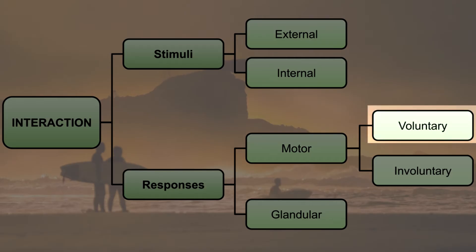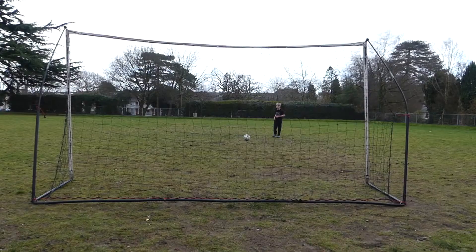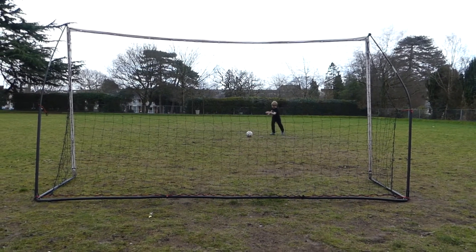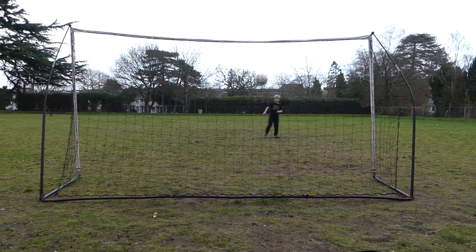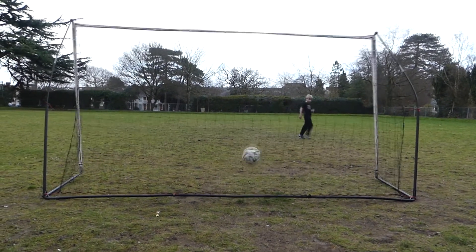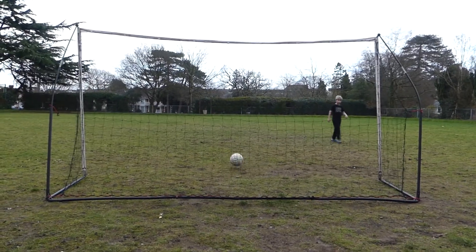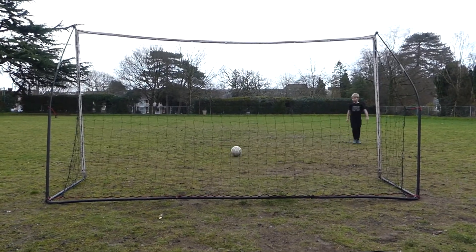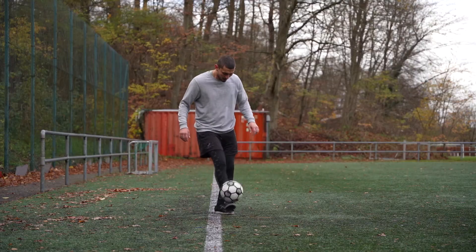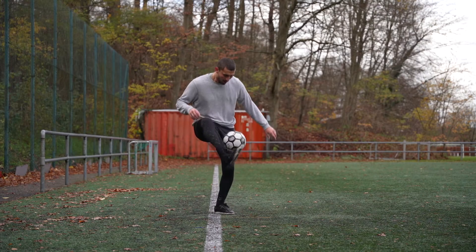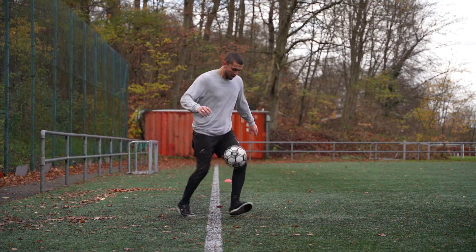Voluntary responses. These are movements you decide to do with your brain. For example, if you see a ball and you decide to kick it, that is a voluntary response. You think about what you want to do and then make it happen.